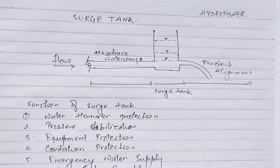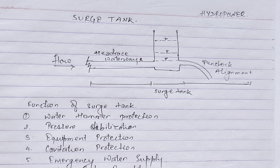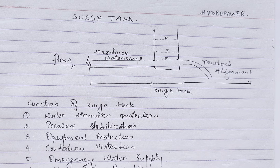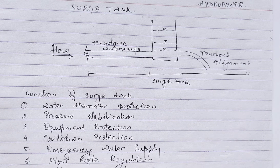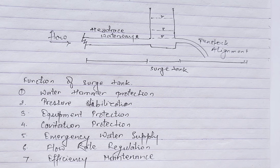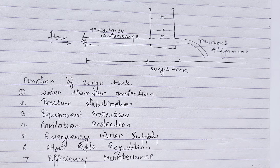Next is emergency water supply: in water supply systems, source tanks serve as emergency water storage during high demand or supply interruptions. Next is flow rate regulation: source tanks help to control and regulate flow rates by adjusting their size and characteristics of the flow. And finally, efficiency maintenance: source tanks contribute to system efficiency by minimizing pressure fluctuations, ensuring reliability, and reducing the need for frequent maintenance.